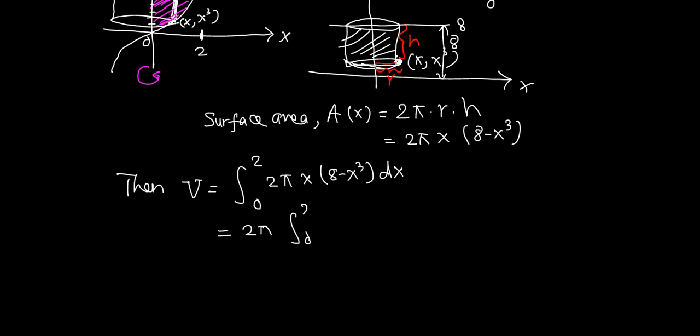Simplify inside, just distribute: 8x minus x to the fourth dx. 2 pi, let's integrate. The antiderivative of 8x is 4x squared, minus x to the fifth over 5, and we want to evaluate from 0 to 2.